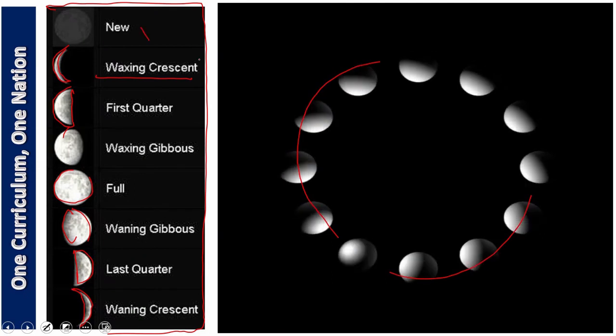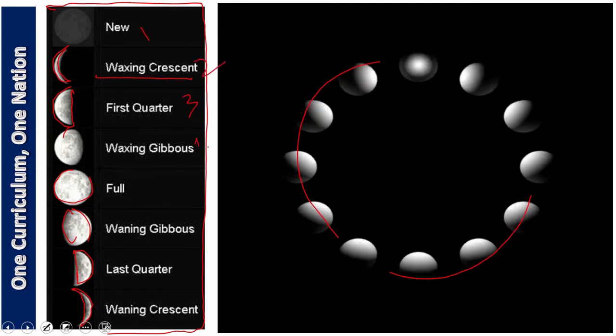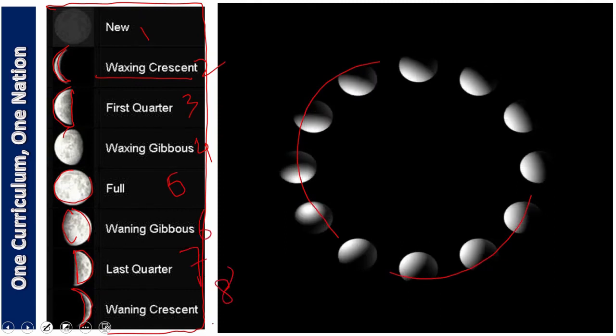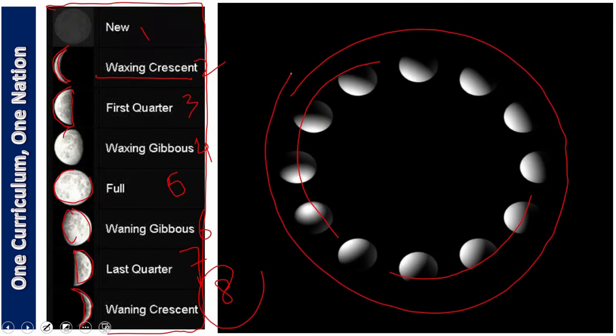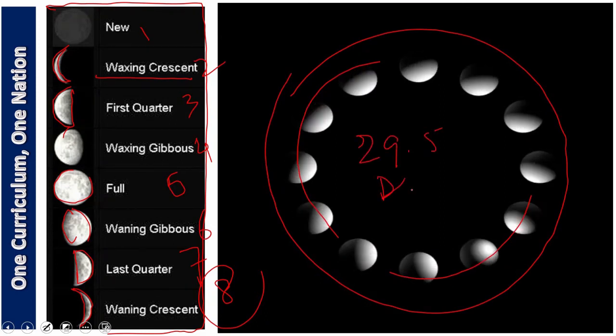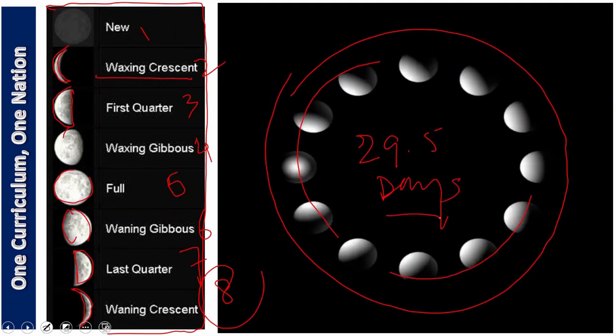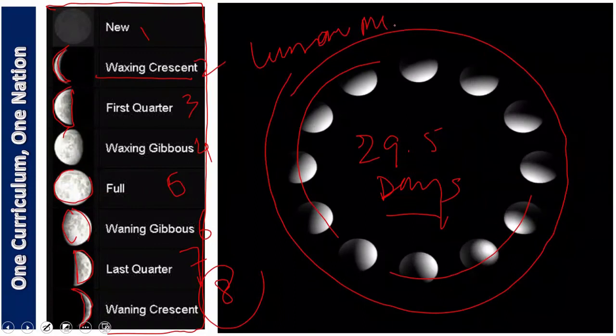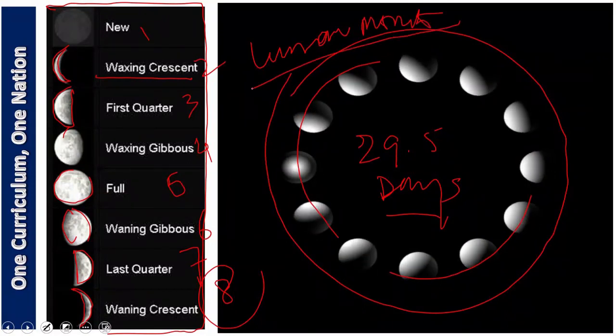Number one, two, three, four, five, six, seven, eight. And when this one complete cycle is completed, then it is 29.5 days. And what do we call this? We call this lunar month. So my dear students.